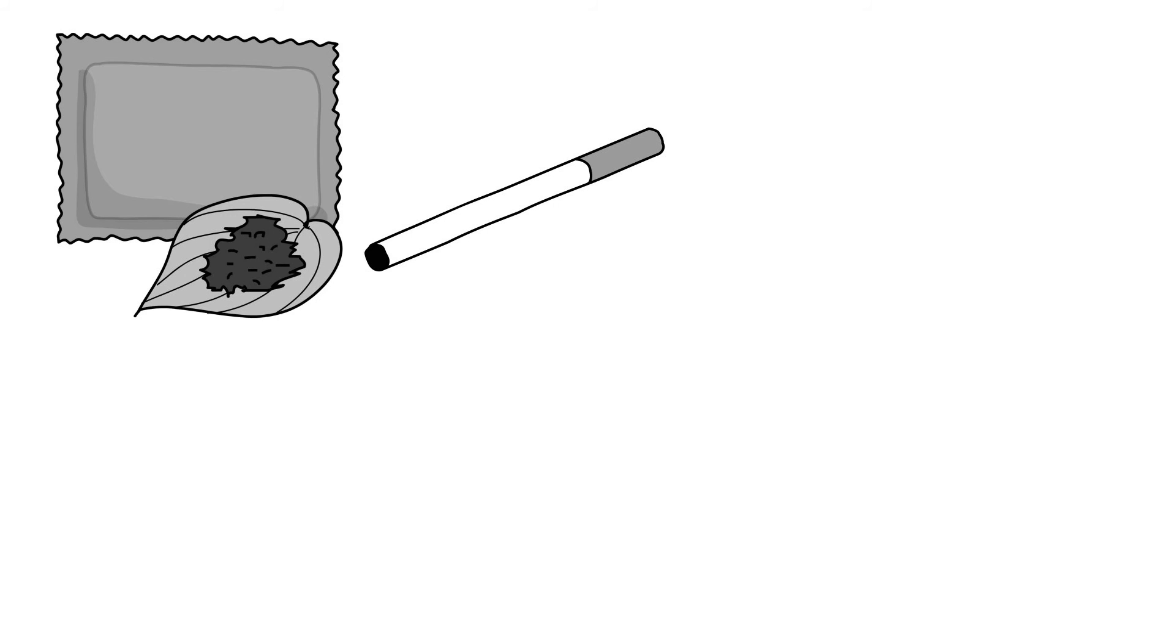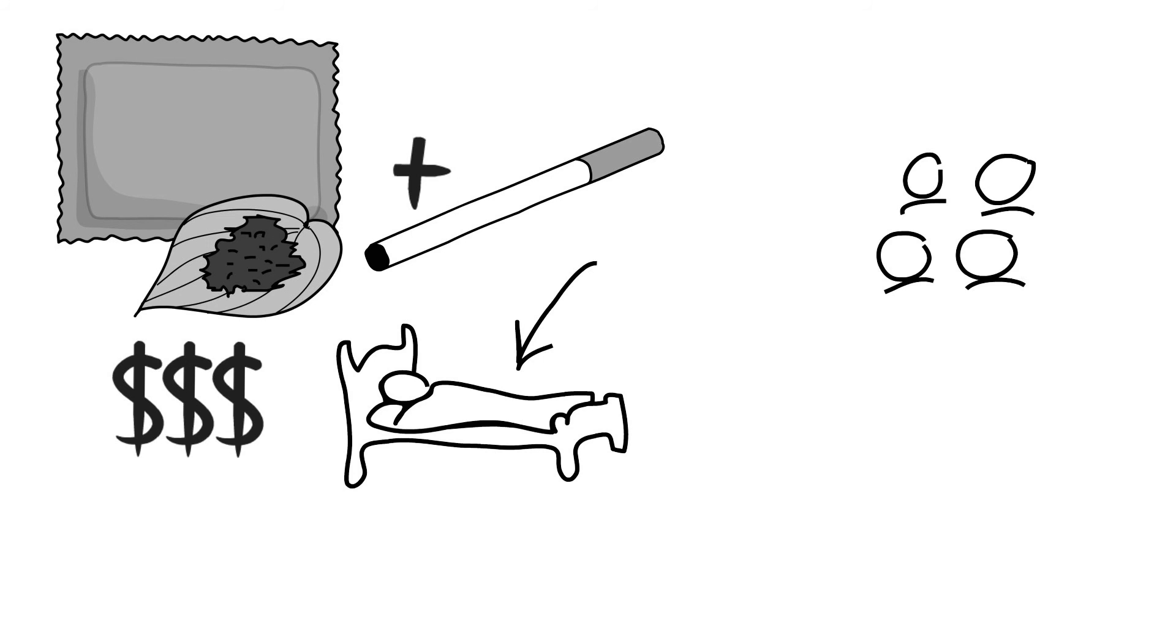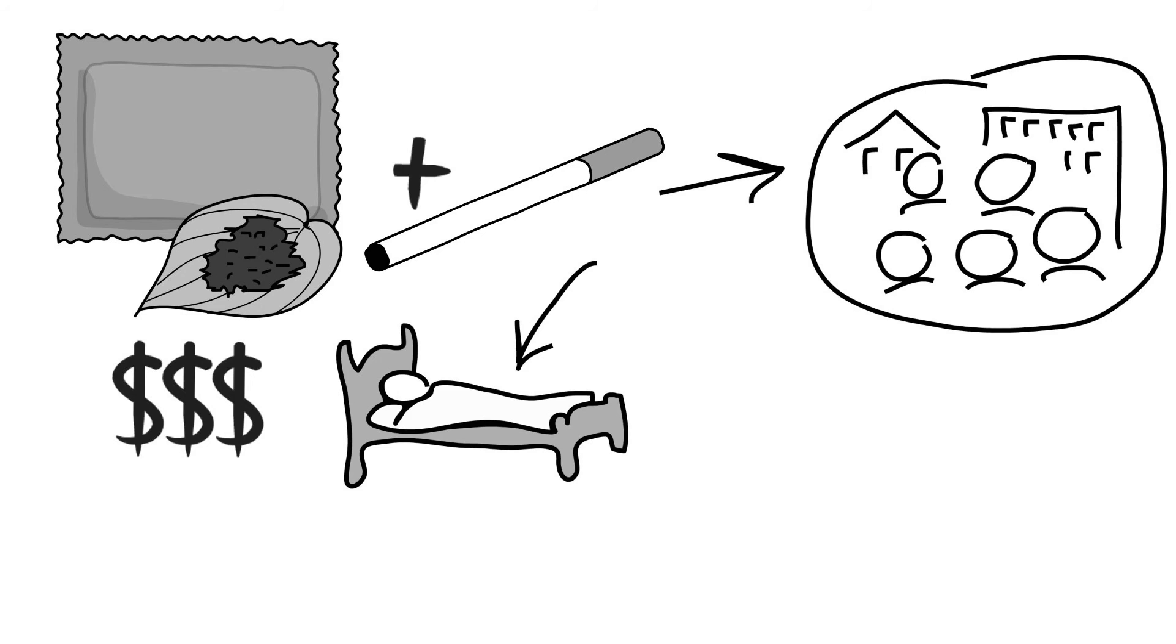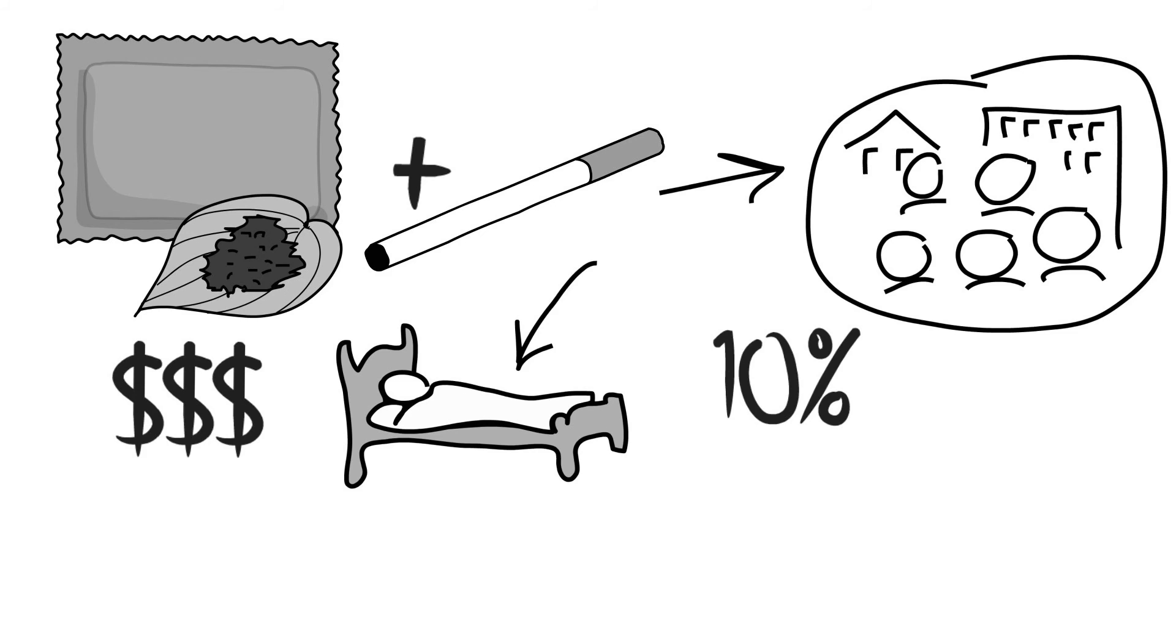In addition to the direct health effects tobacco use has on people, the tobacco epidemic results in costs to society. Direct medical costs of treating tobacco-related illnesses can be significant. For example, in Egypt and Mexico, over 10% of health care expenses are spent on treating tobacco-related illnesses.